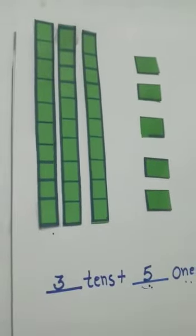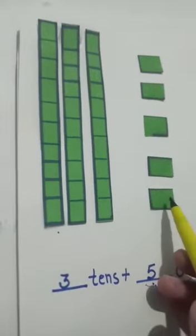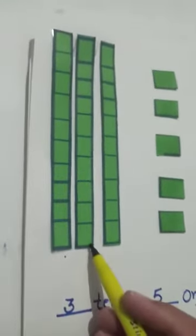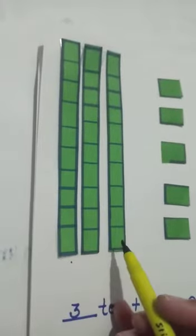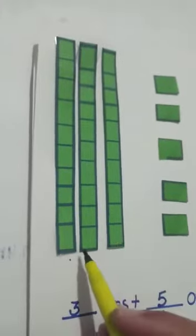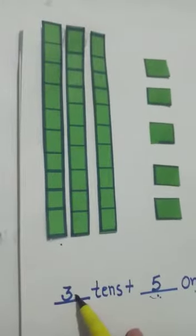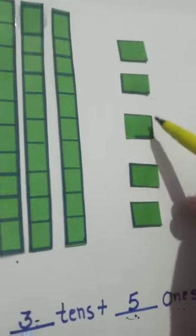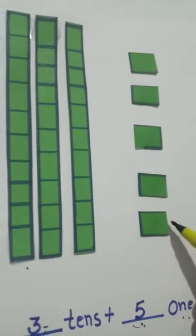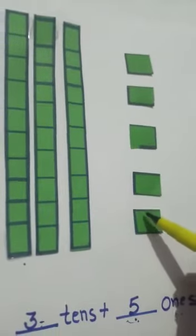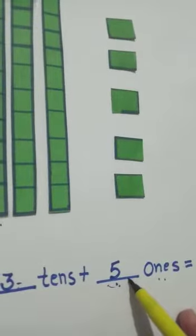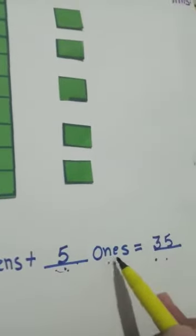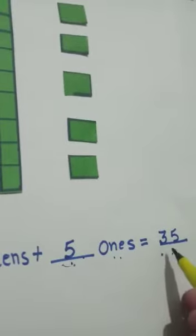Now let's write a number using these units. First, we will count the tens: one, two, three — we have three tens, so we write three here. Now we will count the ones: one, two, three, four, five — we have five ones, so we write five here.